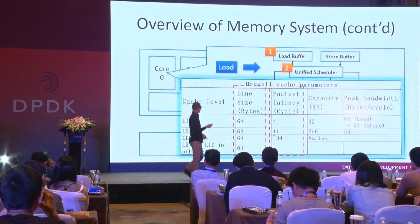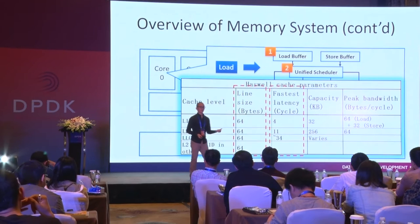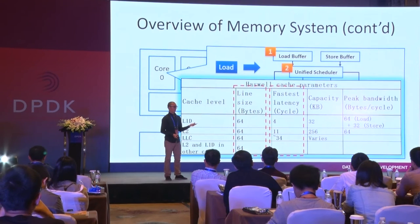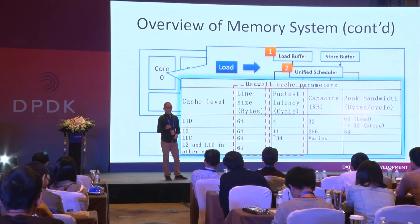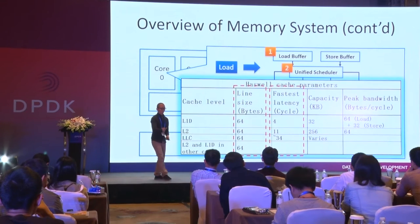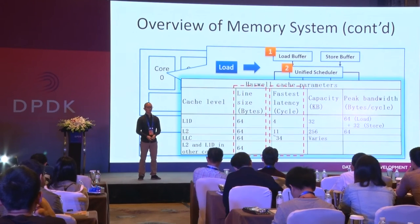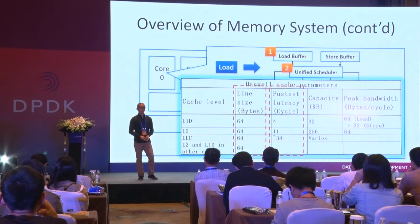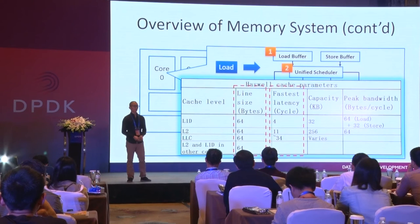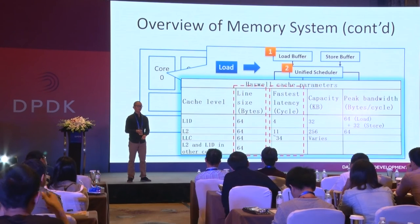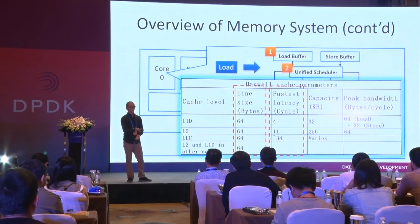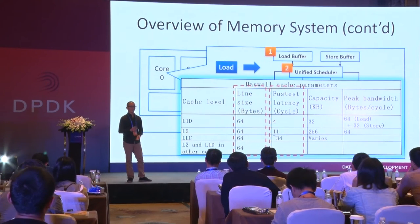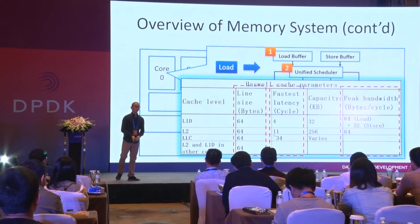Let's take a look at latency. This is the fastest latency; in reality, according to different scenarios, the latency might be higher. If you are closer to the execute domain, the latency will be shorter, but the size will also be smaller. L1 is 4 cycles. L2 is 11 cycles. LLC will be 34 cycles. Since LLC has a different frequency than the core, the fastest is 34 cycles. The last condition — if data is in L2 and L1D of other cores — the latency will be even higher.